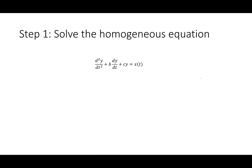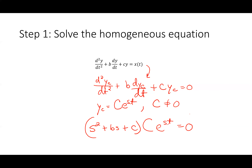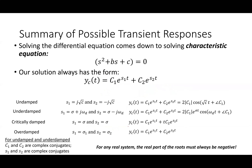When solving the homogeneous equation, I take this equation and set it equal to zero, changing y to y_c for the transient response. I guess that y_c equals Ce^(st). Since c is not zero and e^(st) can never be zero, I solve for the values of s that make the characteristic equation equal to zero.